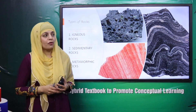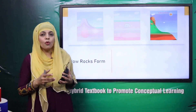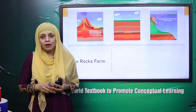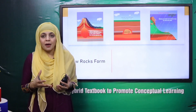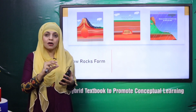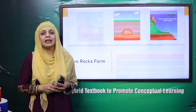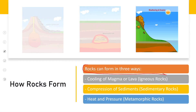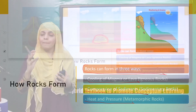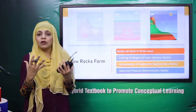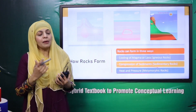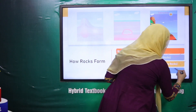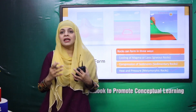Now, moving forward — how do rocks form? Rocks kaise bante hain? Hamne isko detail se pada tha, har rock ke baare mein pada tha ke ye is tariqe se bante hain. Rocks can form in three ways: cooling of magma or lava, compression of sediments, and heat and pressure. Inhi banne ki basis pe hamne inko igneous, sedimentary, and metamorphic rocks mein categorize kiya.